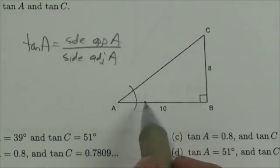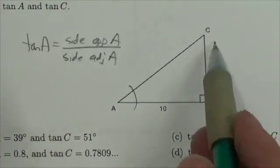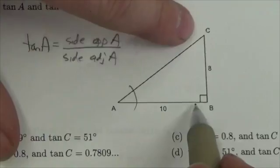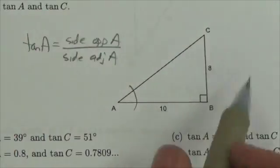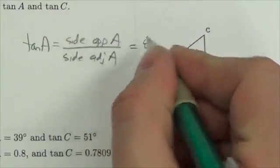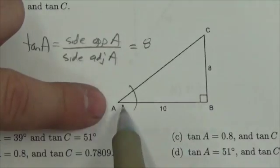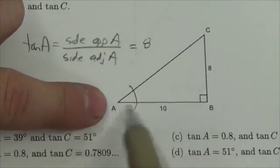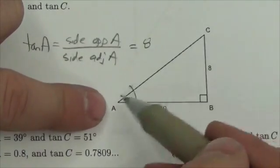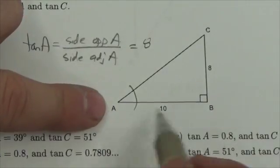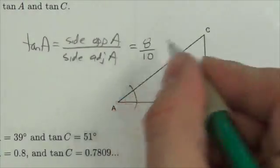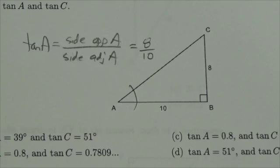Here's angle A. The side opposite it is the side that A is not made up of, so it's going to be 8. The side adjacent to A is one of the sides that helps create the angle. It can't be the longest one here, that's the hypotenuse. So it's this one right here, which is 10. So the tangent of A is going to be 8 over 10.